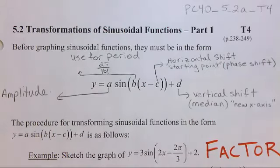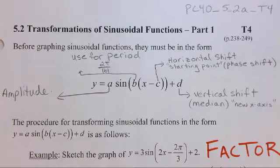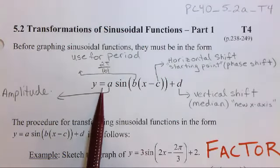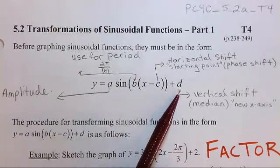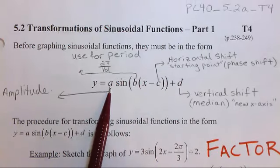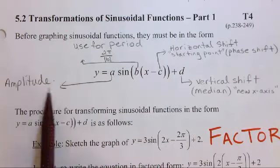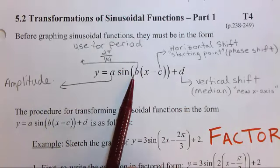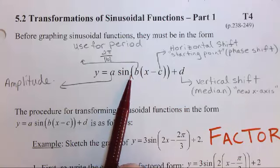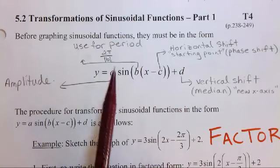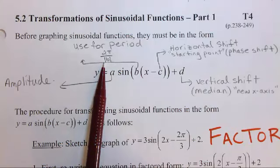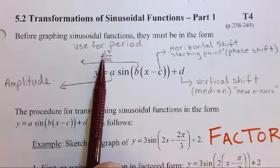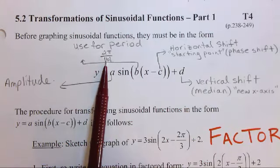All right, so flashback back to chapter one of this course. We've got our set of transformations here. Now, A is for the vertical stretch, which in this case is our amplitude. B is our horizontal stretch factor, but in this case, we use it to figure out what the period will be. So we go 2π over the absolute value of B.